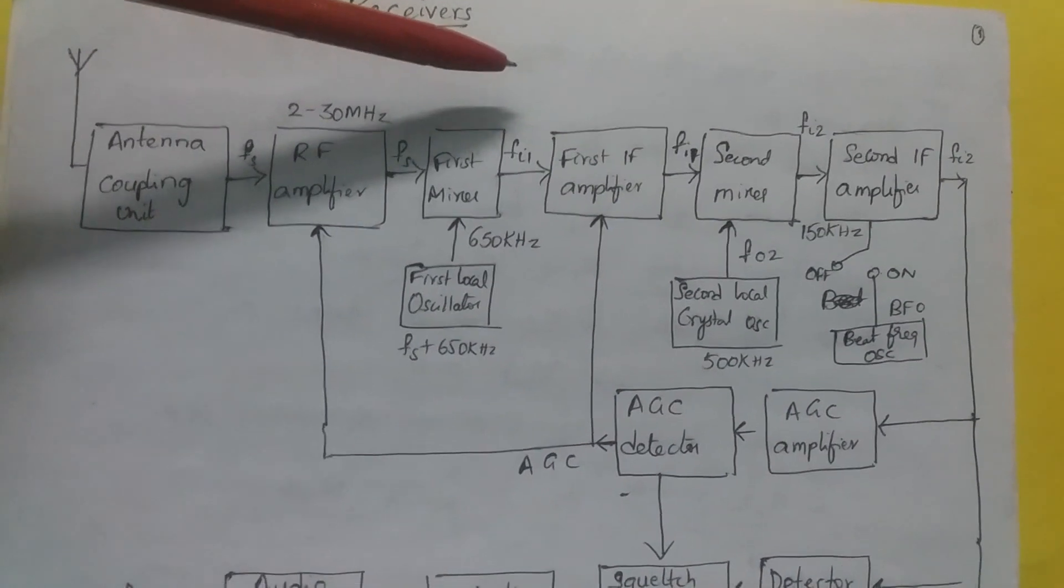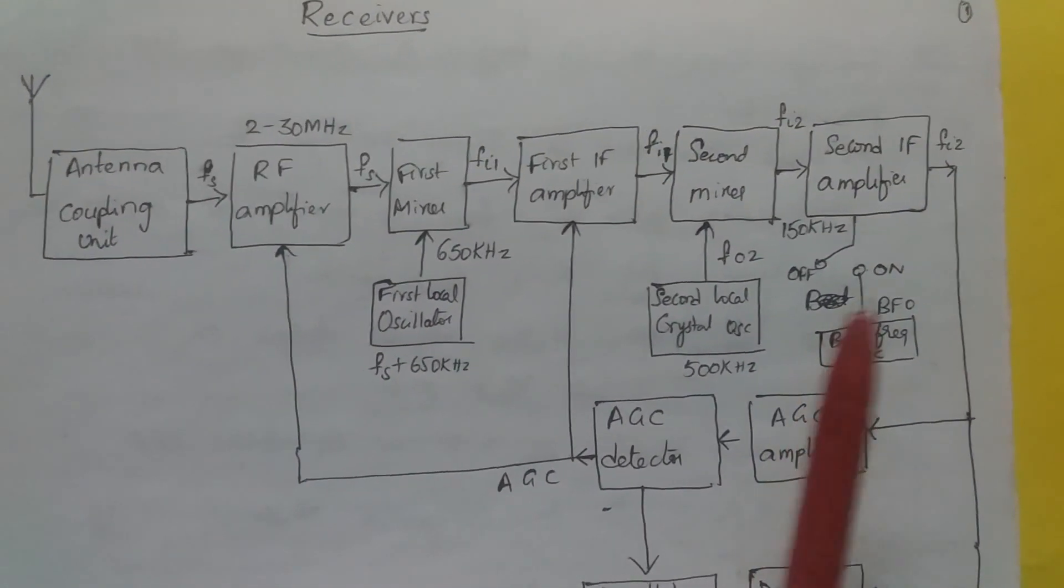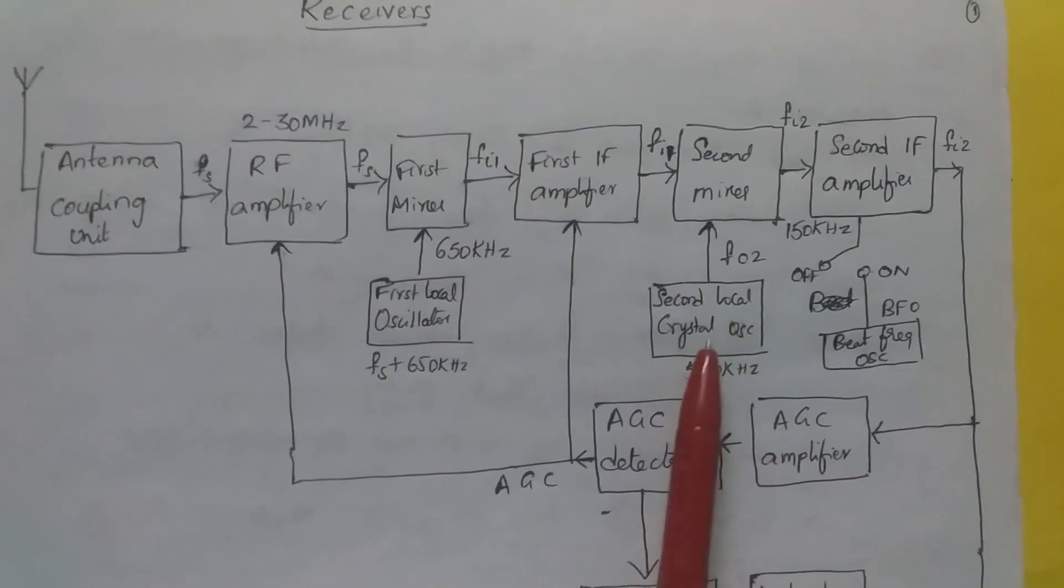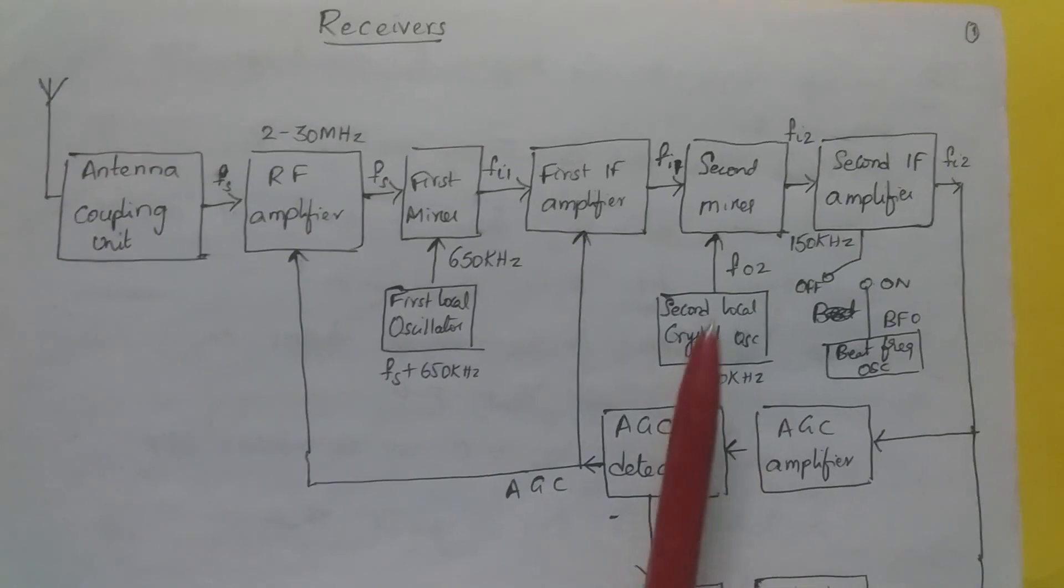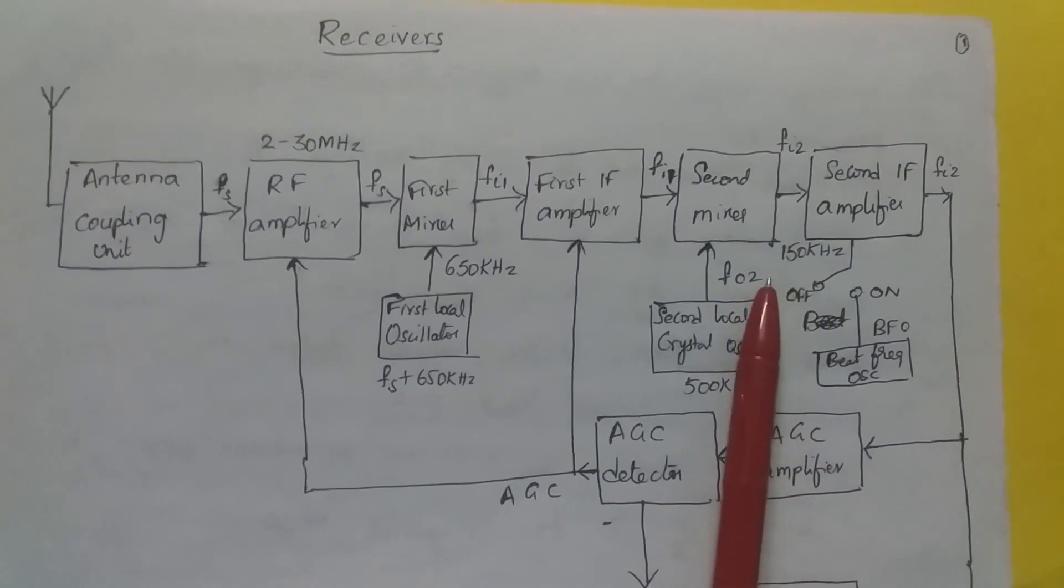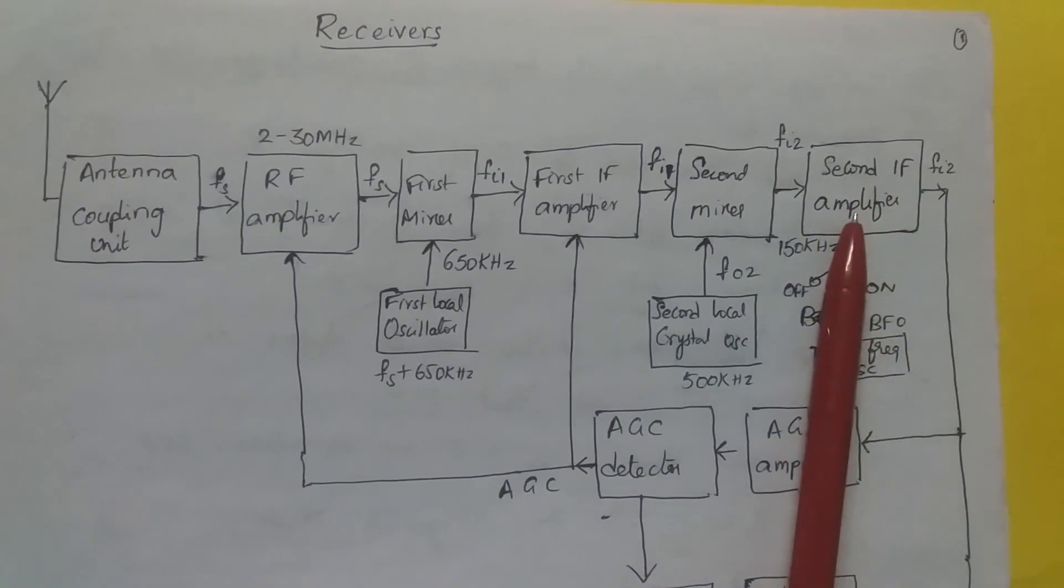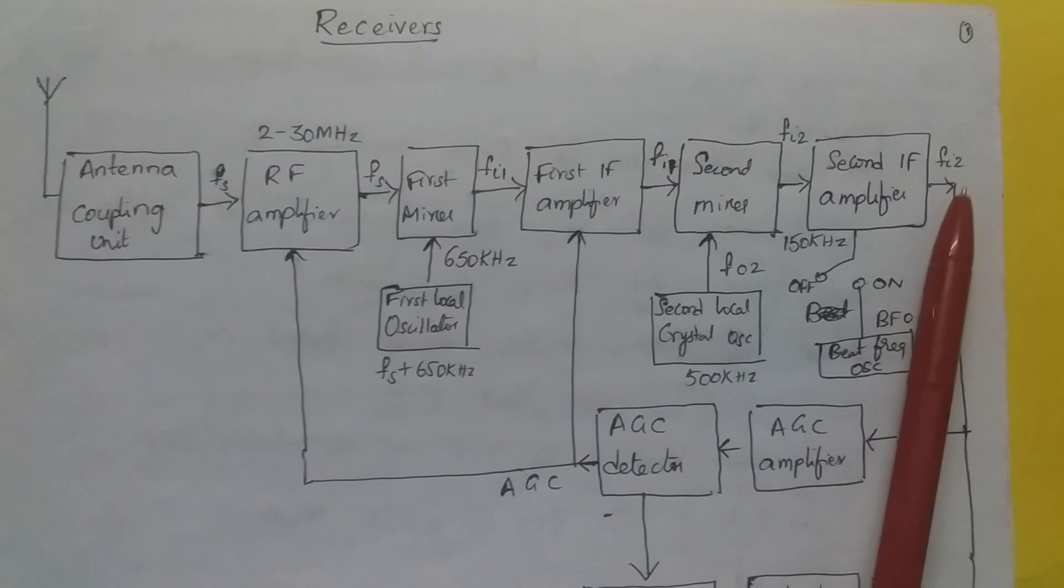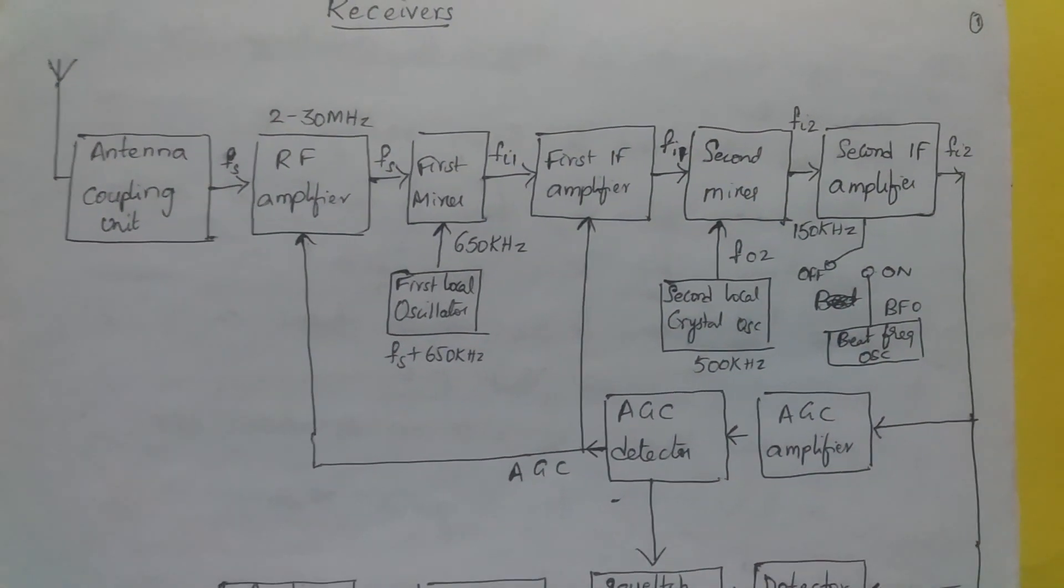This is amplified by the first IF amplifier to suitable level and passed to the second mixer. The output of second mixer is the difference of the second local oscillator frequency 500 kHz and Fi1, so FiT equals 150 kHz. This signal is amplified to suitable level by the second IF amplifier. Part of IF amplifier output is applied to AGC amplifier and part to the detector.